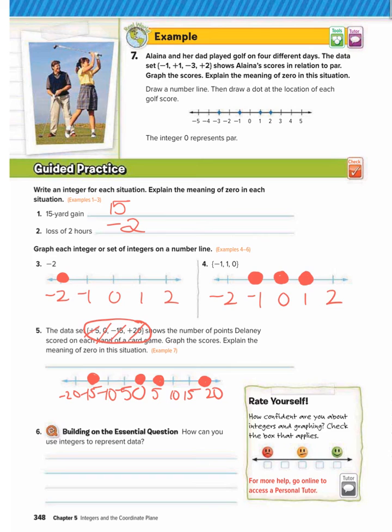So zero in this situation, these numbers represent the number of points Delaney scored on each hand of a card game. So zero means she didn't score any points, but she also didn't lose any points in this situation.